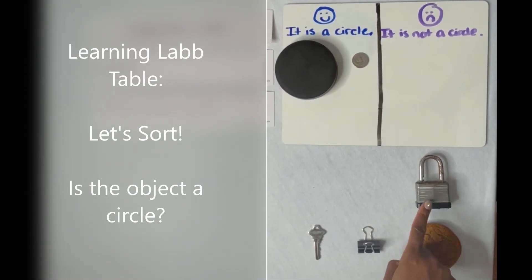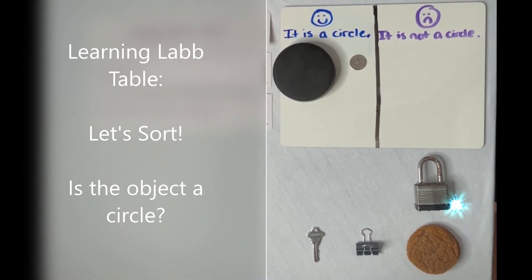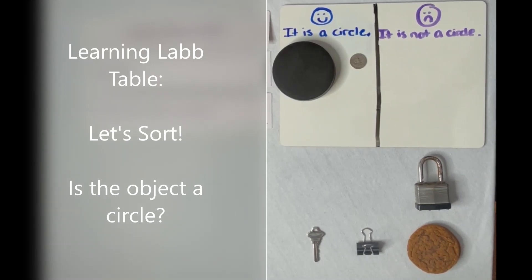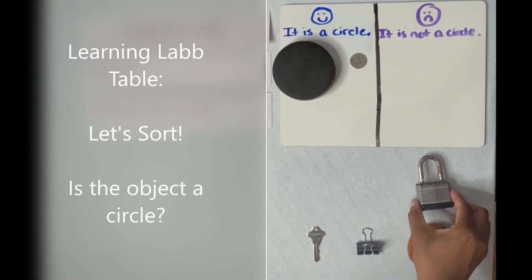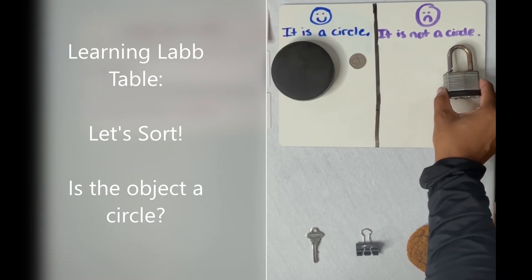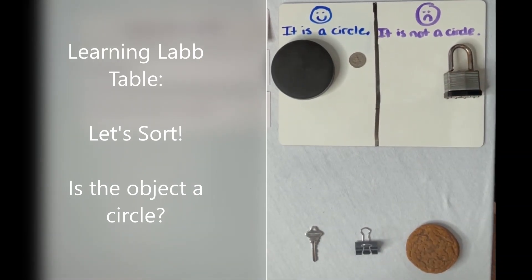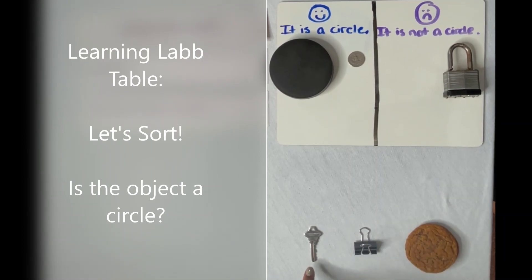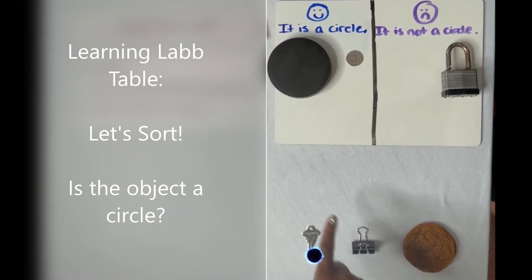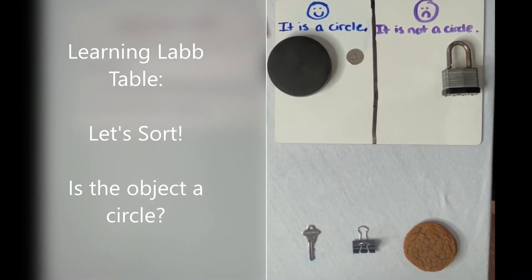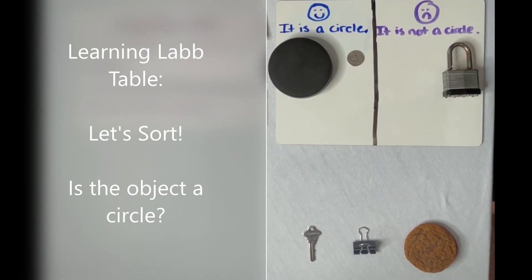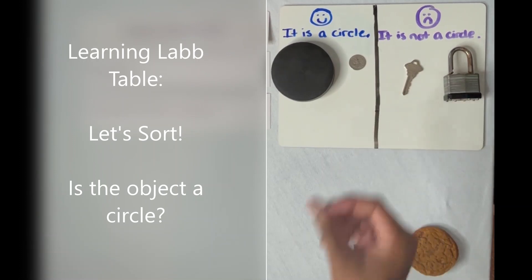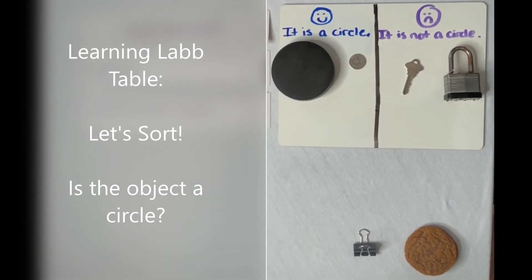The next one is a lock. Is it round with no sides and no corners? No. So we're going to put it where it has the sad face. We have the key next. Is it round with no sides and no corners? Nope. We're going to place it under the sad face — it is not a circle.